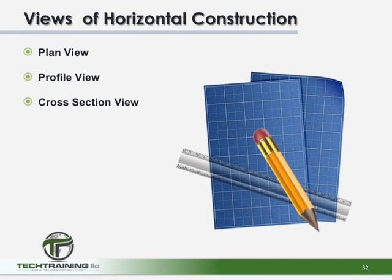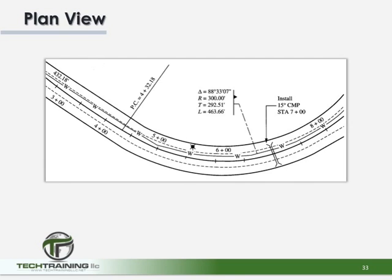Now horizontal construction is typically presented in three different views: the plan view, the profile view, and the cross section view. The plan view looks down on the project. This view shows the center line of the project as well as the project limits. The project limits are shown as the dark exterior lines in the drawing.